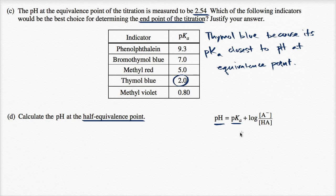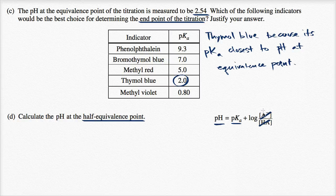Well, at the half equivalence point, the acid and the conjugate base, their concentrations are going to be equivalent. So this and this are going to cancel out. You're just going to get one.